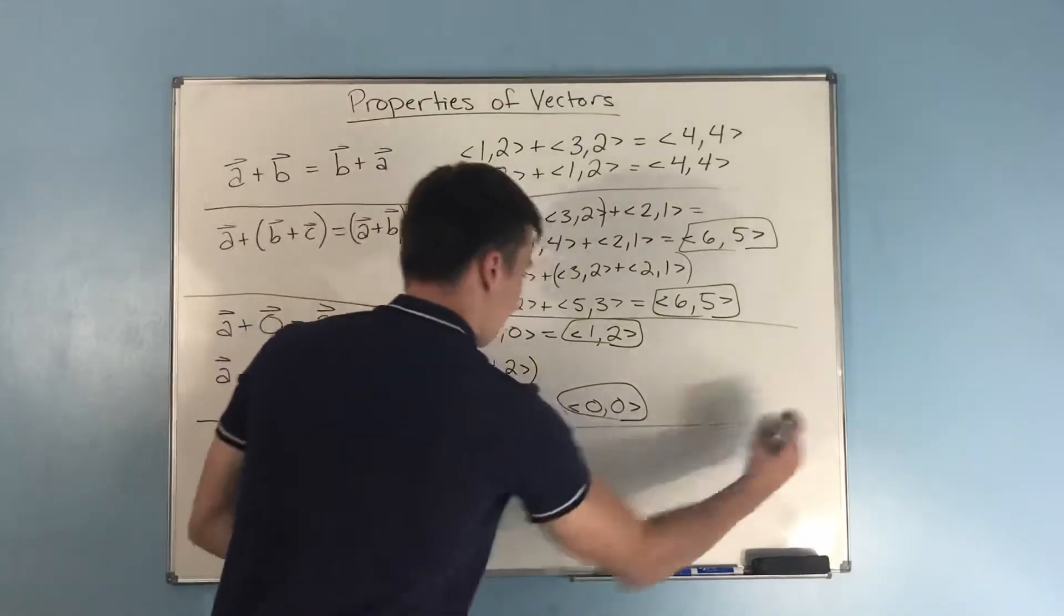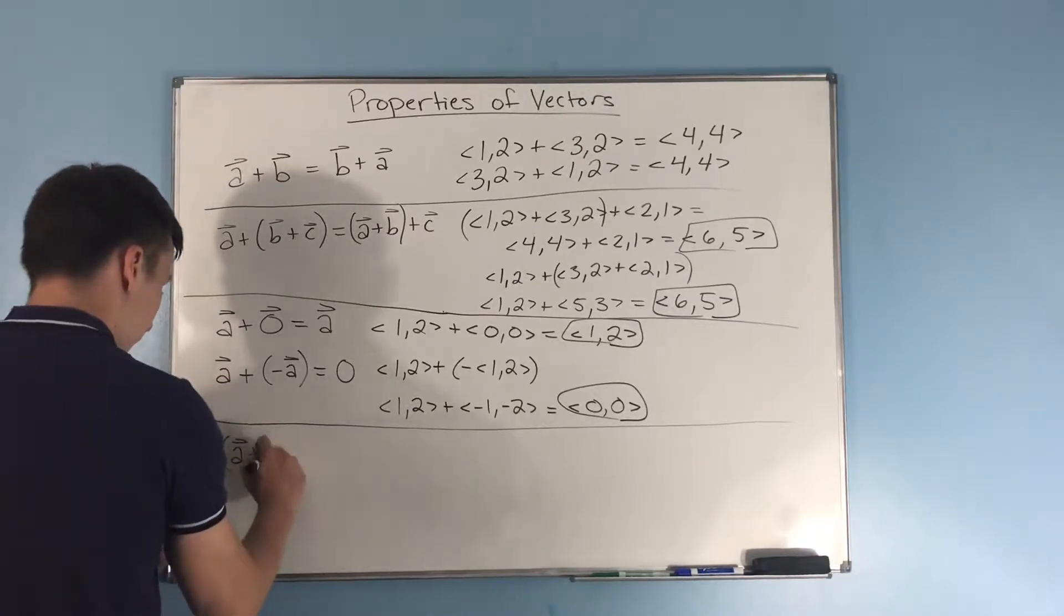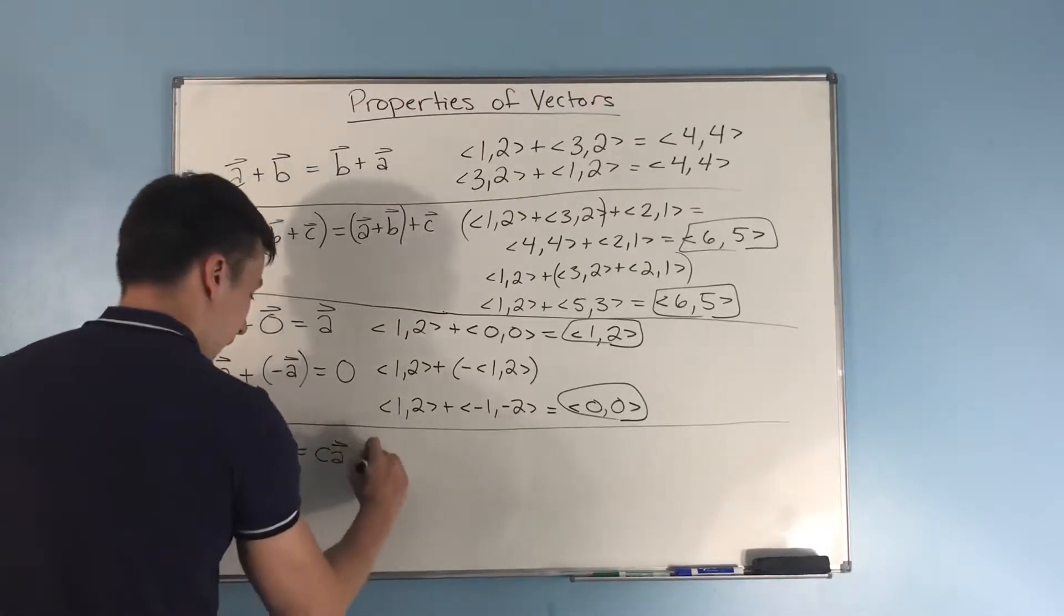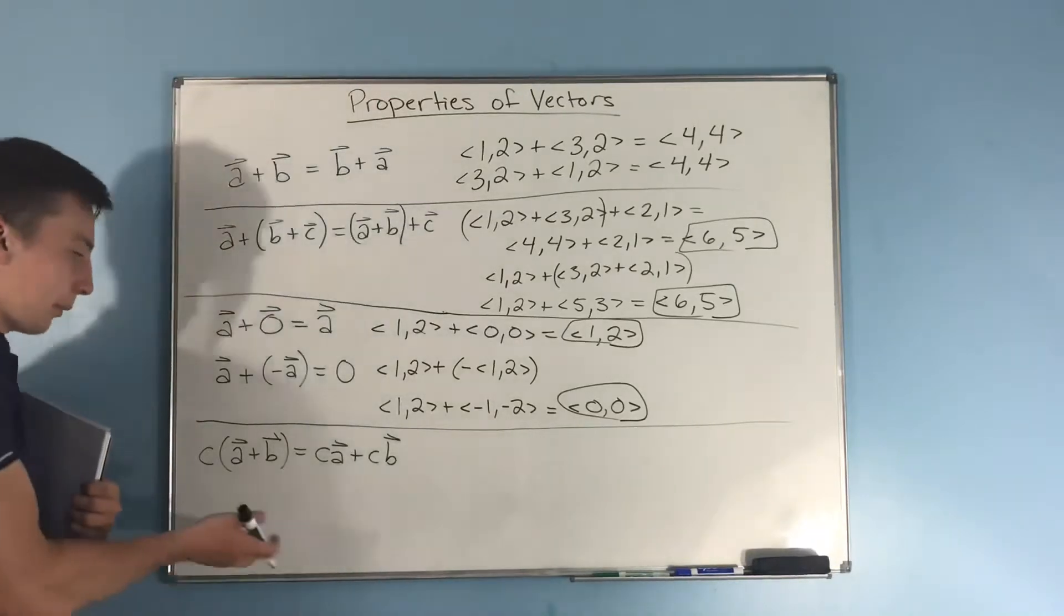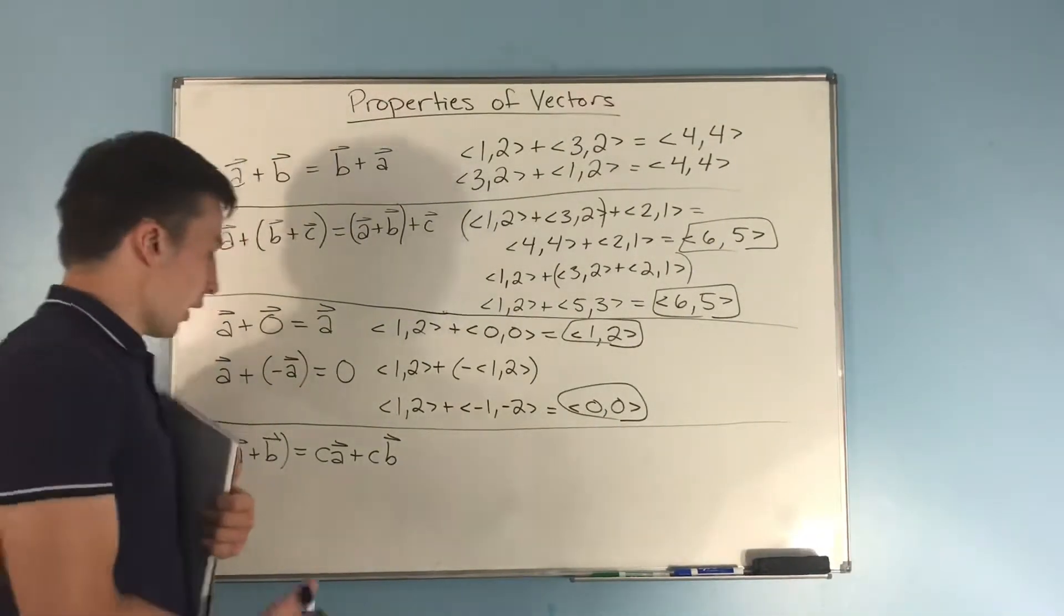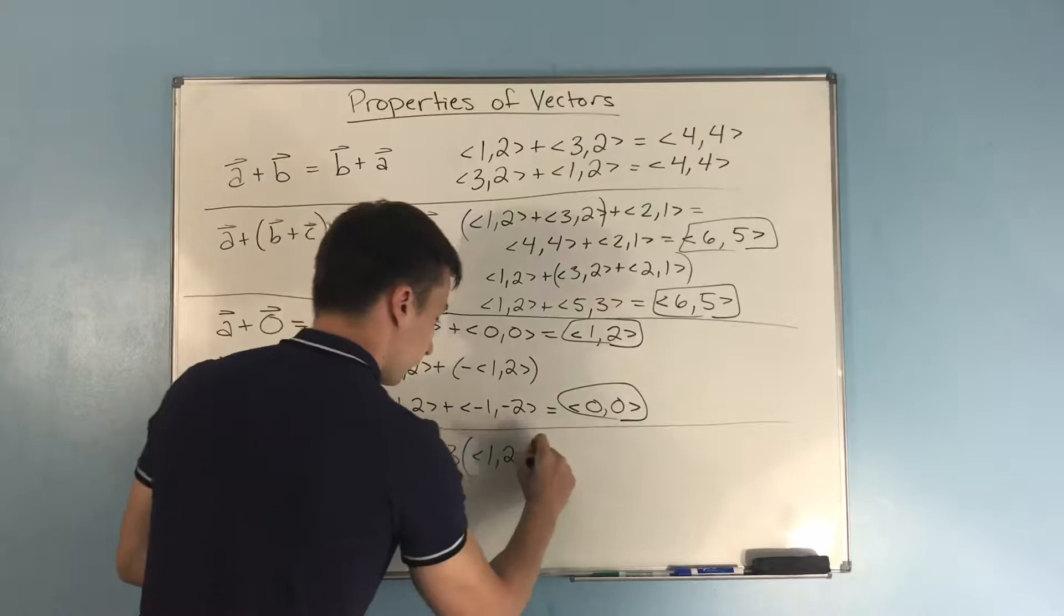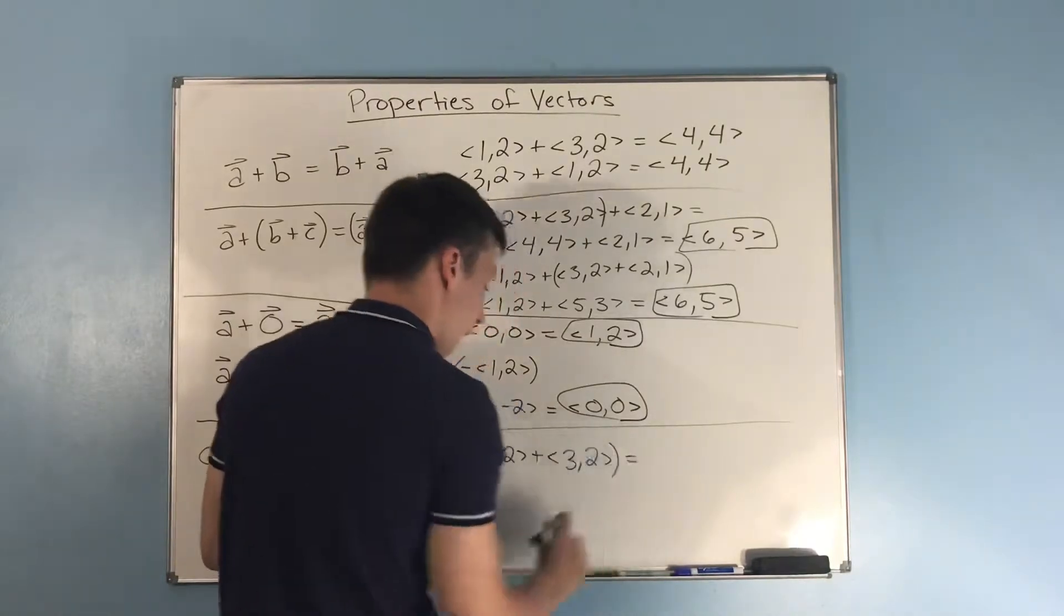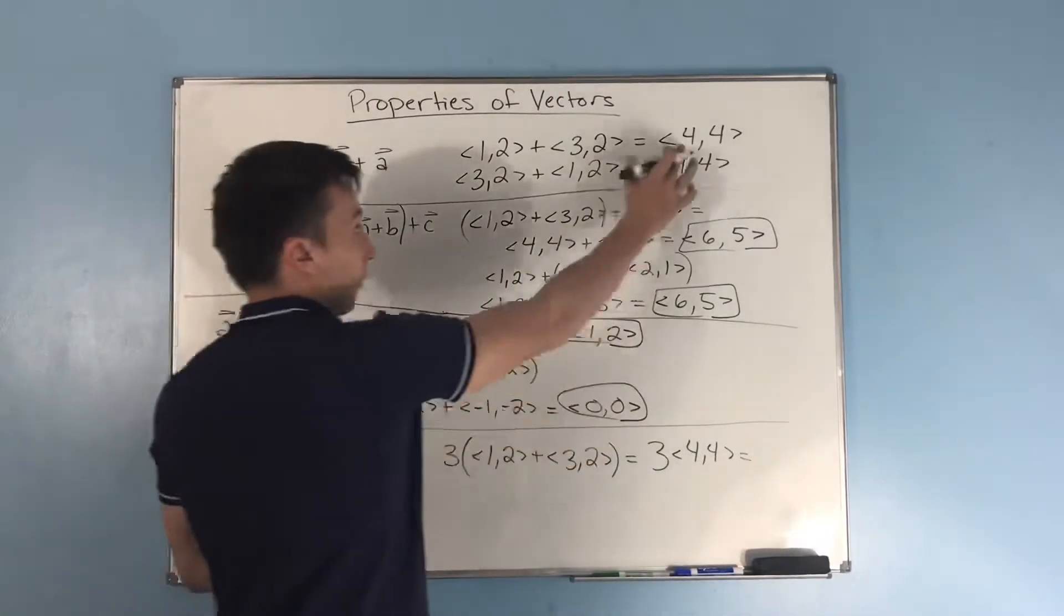Now, let's do just one more before I erase the board here. We have C times vectors A and vector B added together is equal to C times vector A plus C times vector B. This also pretty much makes sense, right? This is just the same thing as it is with numbers. If you have a scalar, let's say we have 3 times 1,2 plus 3,2. This is the same thing as 3 times 4,4, right? You just add the inside, and we get 4,4 as we did up here.